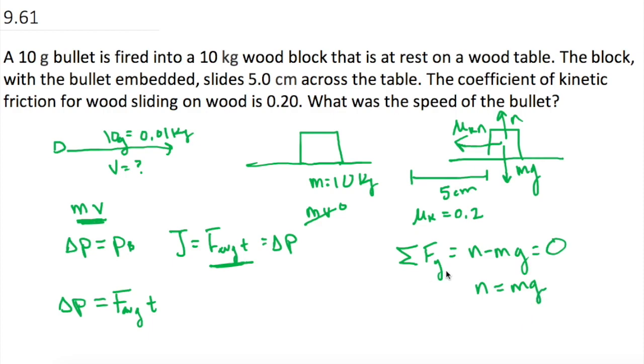Good, so now we can solve for our friction force because we know that the friction force is equal to mu sub k, which they give us, times n, which we just solved for as mg. So mu sub k times m times g gives us 0.2 times the mass, and in this case, is the mass of the block plus the mass of the bullet. So that is going to be 10.01 kg times 9.8, and that is equal to 19.6196 newtons.